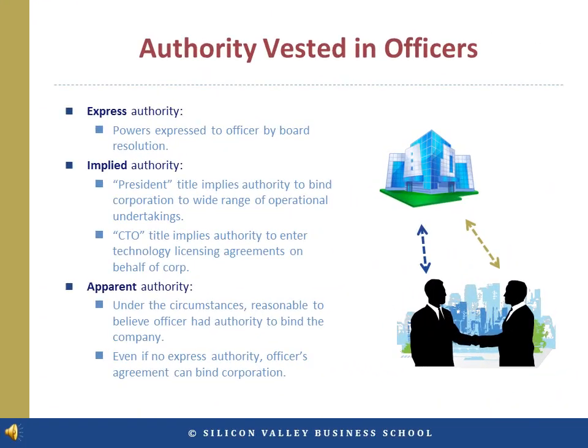A CEO or another officer often speaks on behalf of the corporation. How is the authority to bind the corporation to agreements vested in these offices? Turning to the fundamentals of agency, we see there are three methods: express, implied, and apparent authority.